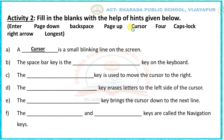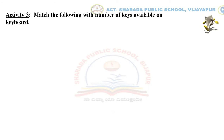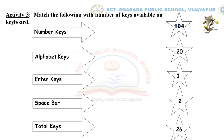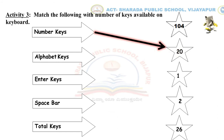Now we will move to Activity Number 3 — match the following with the number of keys available on the keyboard. On the left side you can see the names of the keys, and on the right side the number of keys available on the keyboard. Let me solve one for you: Number Keys — how many number keys are available? The answer is 20. So draw an arrow from Number Keys to the number 20. Similarly, continue with all questions: Alphabet Keys, Enter Keys, Spacebar, Total Keys.